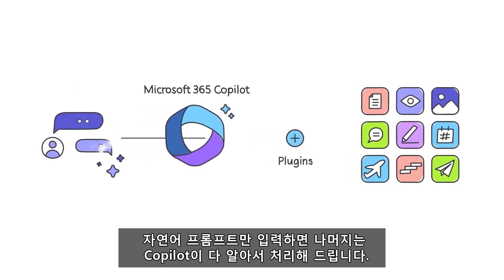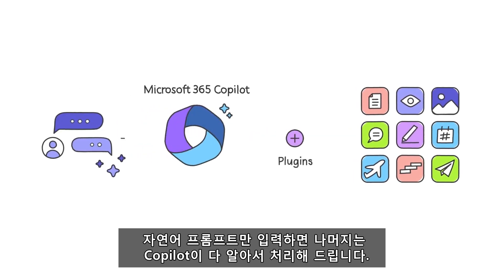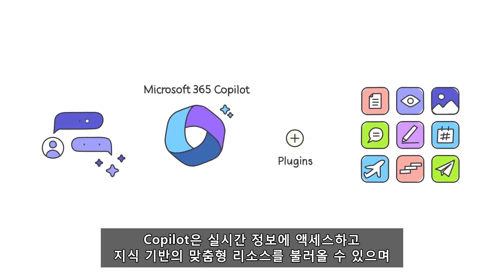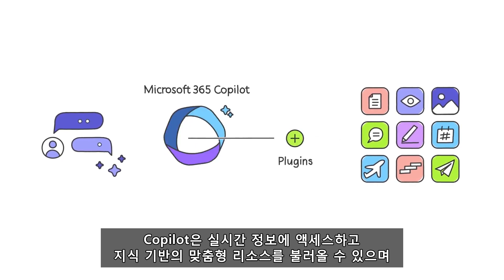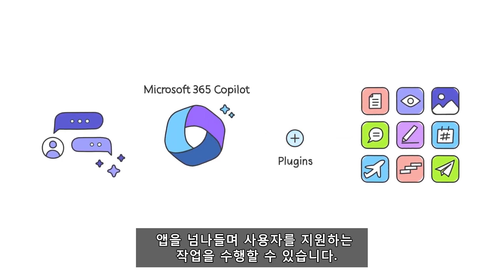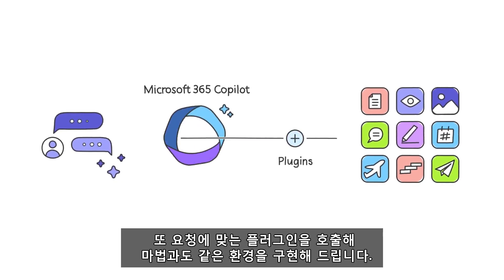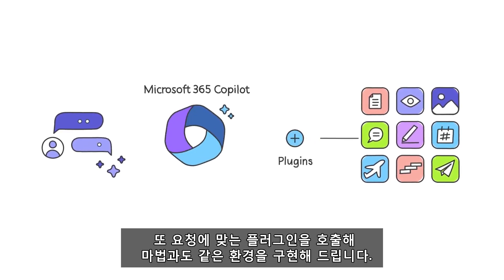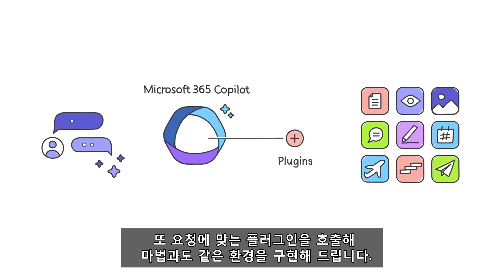Use your words as input and Copilot will handle the rest. It can access real-time information, retrieve tailored knowledge-based resources, and assist users with actions across apps. It calls the appropriate plugin for your request to deliver an experience that feels like magic.